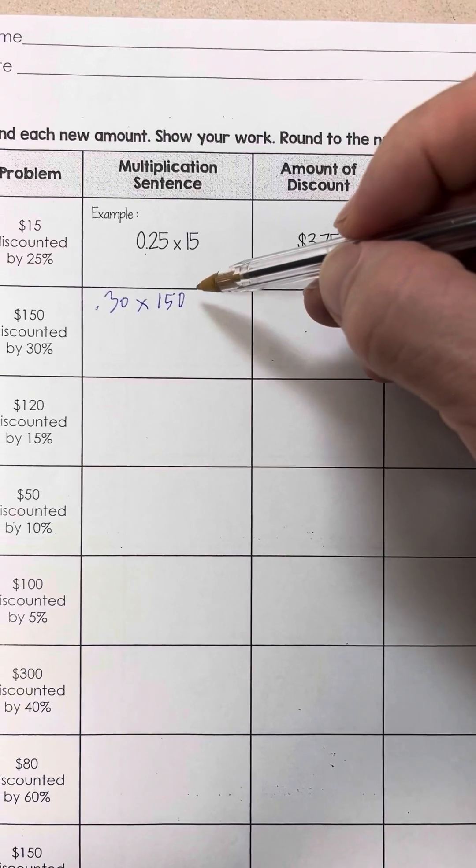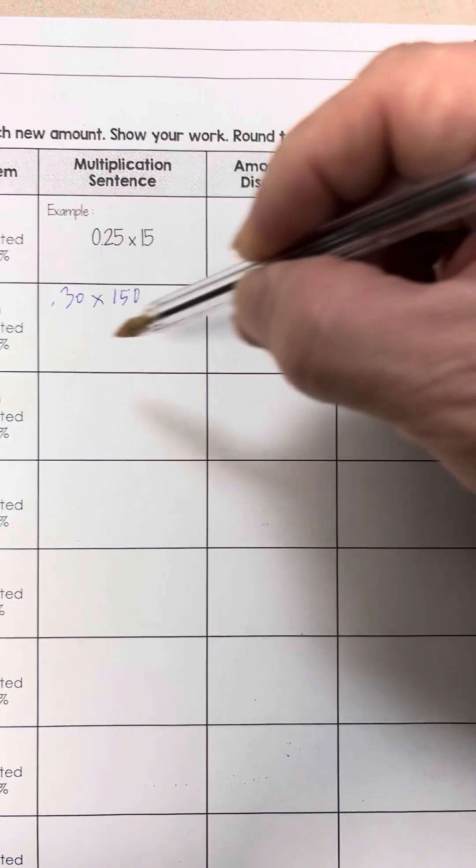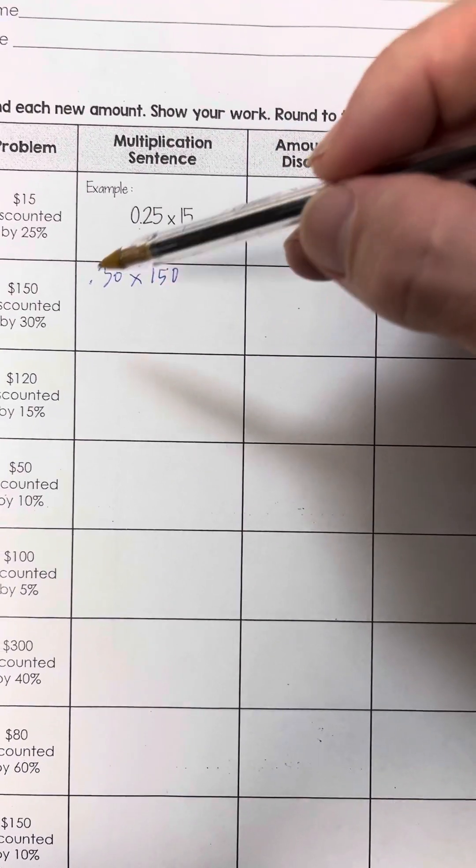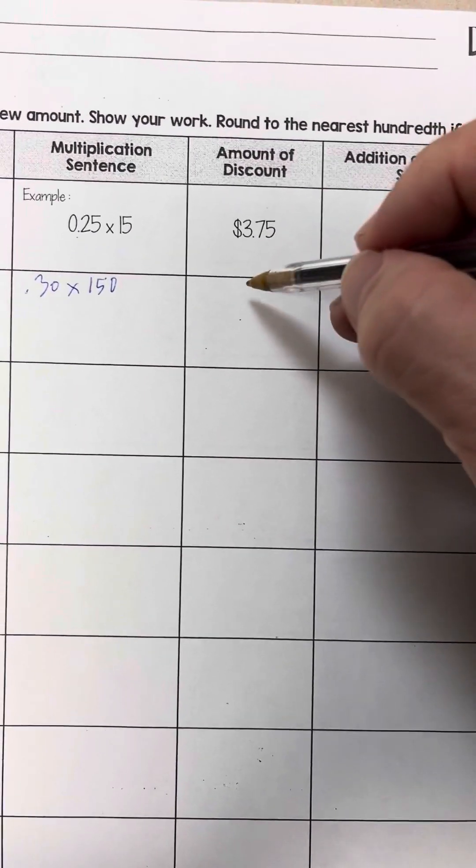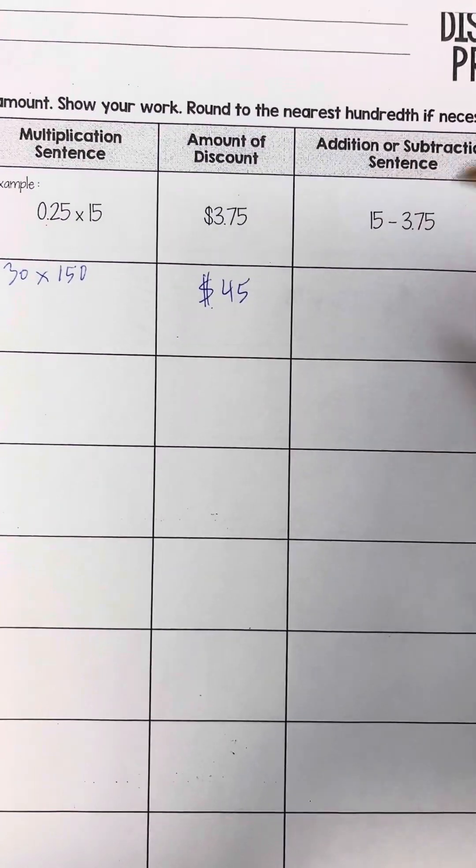And if you do the math on that, this is your multiplication sentence: 0.30 times 150. That's, in other words, 30% of 150 is $45.